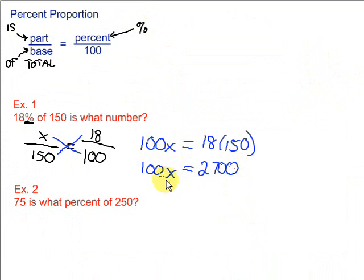Then to solve, we want to get that x by itself. To do that, we'll divide by 100 on both sides. These cancel out, of course, and we're left with x equals 27. So that means 18% of 150 is 27. That's our solution.